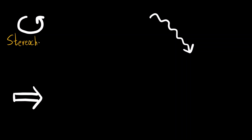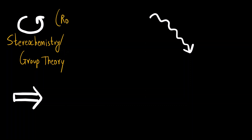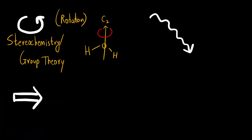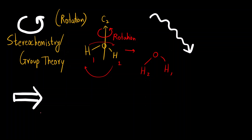This curved arrow is used in stereochemistry and group theory to indicate rotation — it is called a stereochemical arrow. For example, for a water molecule applying a C2 axis, I show the rotation with this curved arrow. After rotation, H1 and H2 swap positions. This arrow indicates rotational symmetry operations.